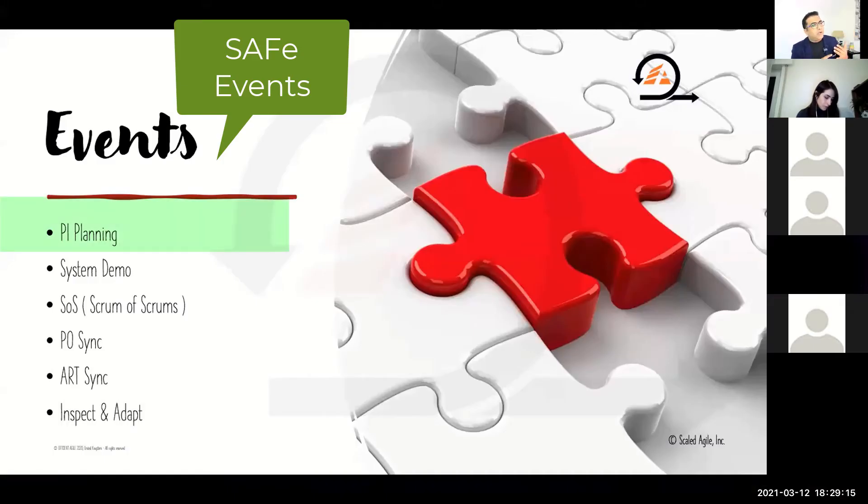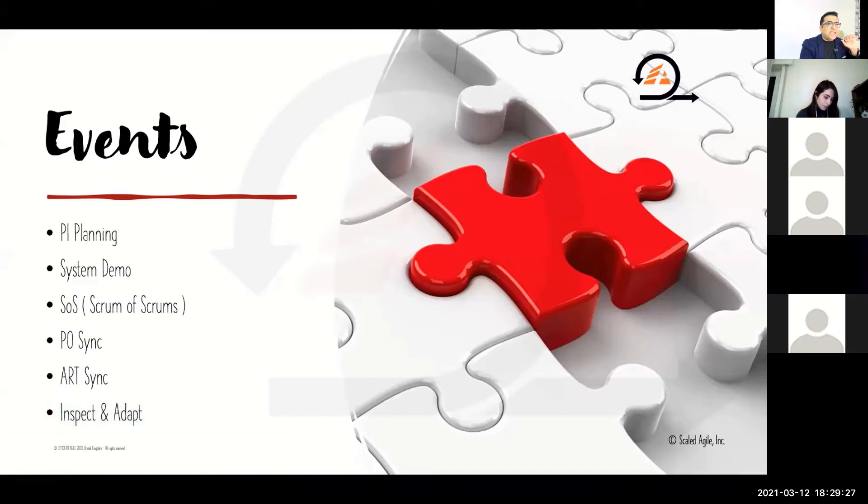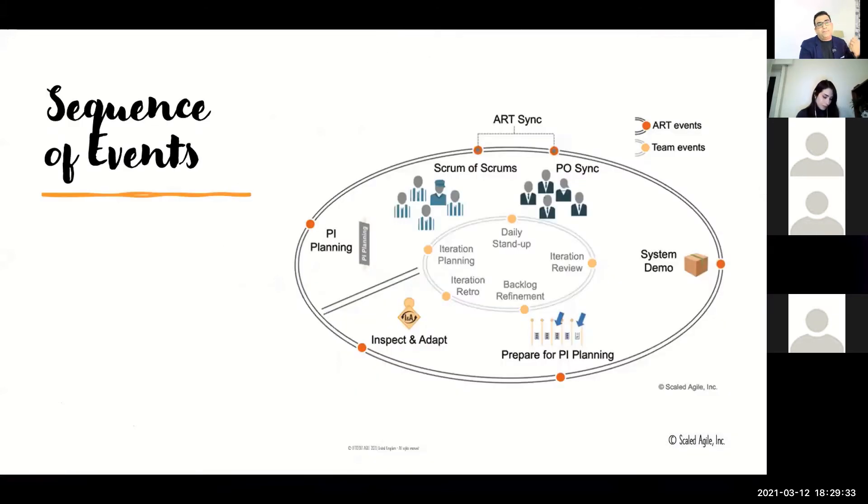A couple of key events are the PI planning, the system demo, scrum of scrums, the PO sync, and the inspect and adapt. Let's look at the sequence of events, how these events are done. If you look at this diagram, let me highlight a few things.